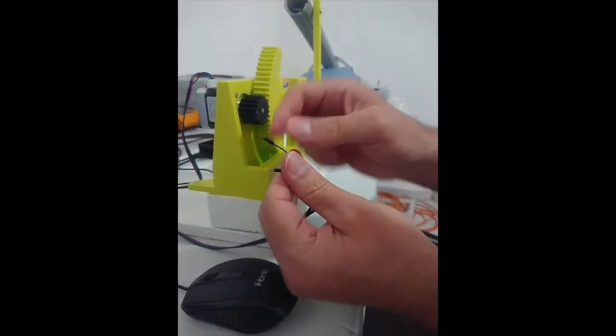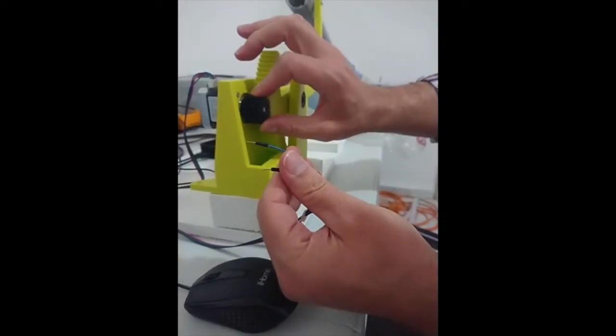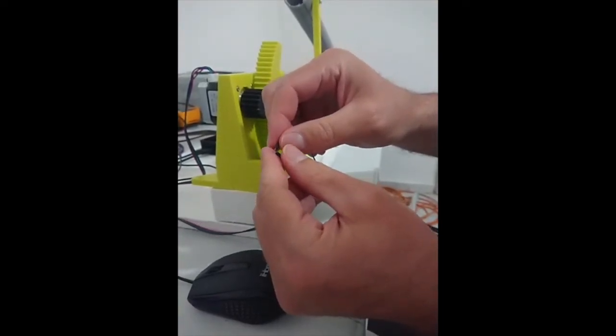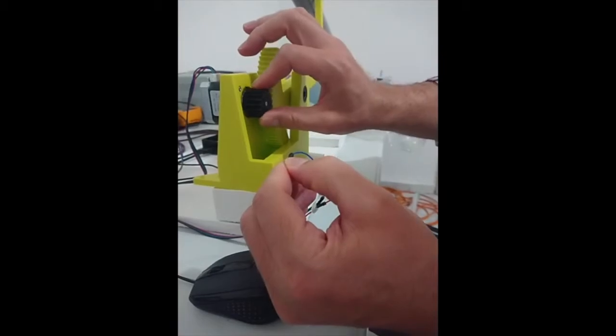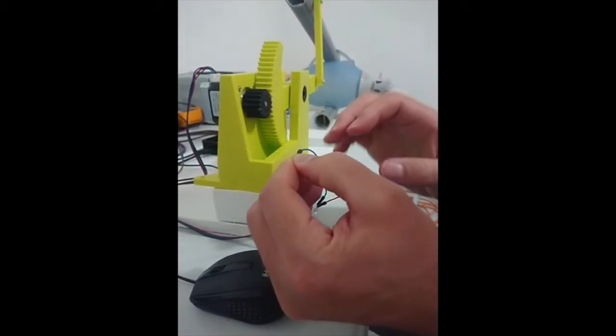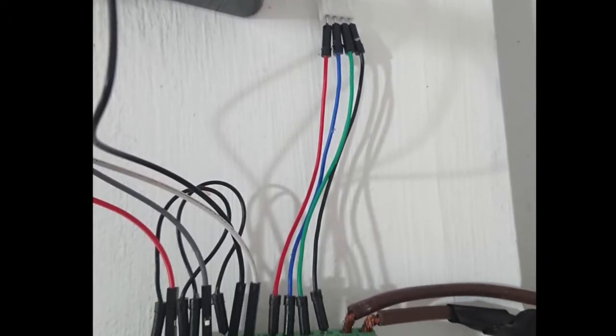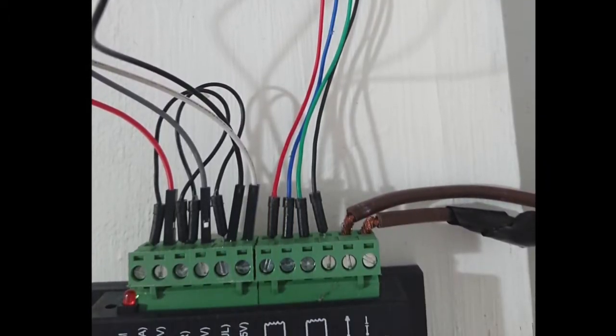There is also a simple check. Twist the motor without touching two wires. Then, touch two wires. If the motor is harder to turn while the two wires are touching, you have found a coil pair. Insert those two wires in coil connections A plus and A minus and the other two wires in B plus and B minus in any order.